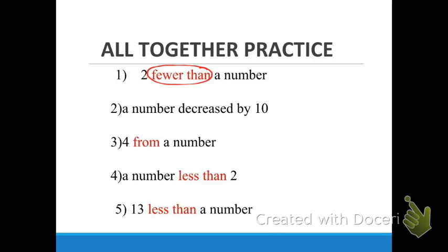In number two, are there turnaround words? No — no turnaround words in number two. Number three — the turnaround word is 'from,' the hardest one to remember. Number four has 'less than.' And number five also has 'less than.' So all of them except number two had turnaround words.